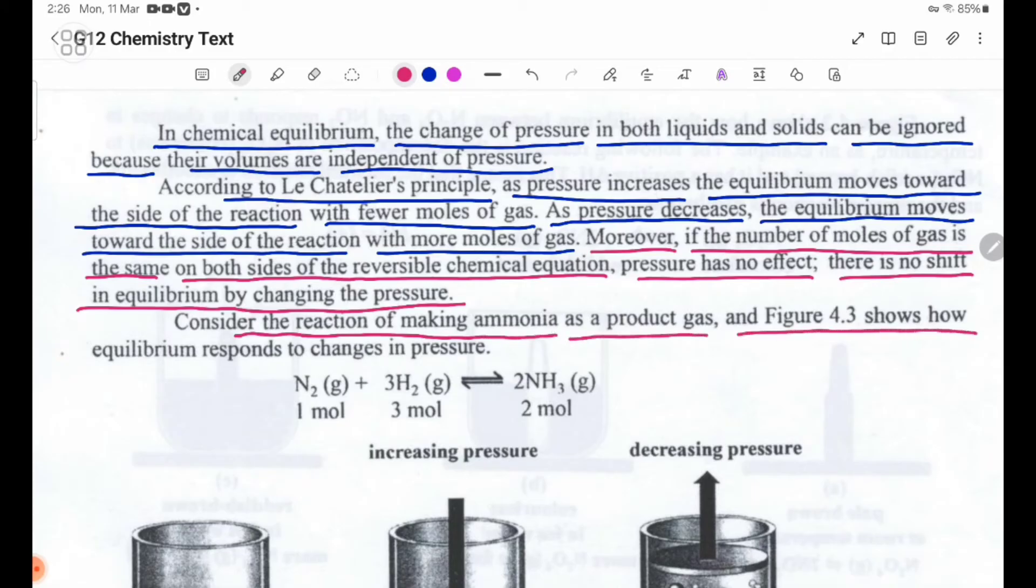Consider the reaction of ammonia as a product gas. Figure 4.3 shows how equilibrium responds to changes in pressure. Nitrogen gas plus hydrogen gas, reversible reaction, ammonia gas.